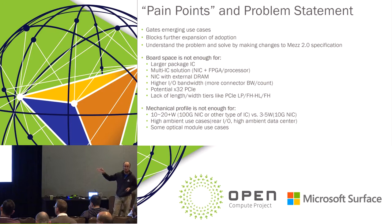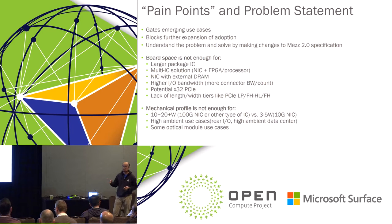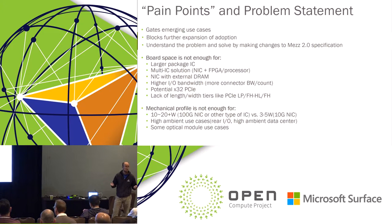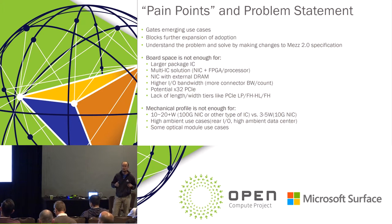A couple of other feedback points: on the PCIe side, we currently support x16 Gen4, but there's a wish list for extending that to x32, which also ties back to the co-processing or FPGA use case. All these trends are pointing to the limitations of our mechanical form factor. And another one I didn't mention is the optical use case — when we designed this, we didn't really have optical use cases on our mind. When we put out the spec, we didn't have specifications around optical support. With the wide adoption of the form factor, people are using optical cells and passive cables, and we need to make it more friendly for adopters.